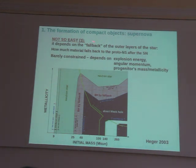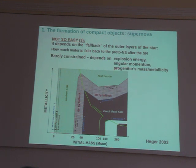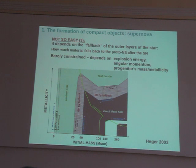Then there is also very uncertain what is the fallback. During a supernova you may be able to eject all the outer layers, or some of them can fall back onto the proto-neutron star and accrete very fast on it. It is very unclear what is the amount of fallback that can accrete onto the proto-neutron star, because it depends on the explosion energy, on the angular momentum transferred inside the central part of the star, and on the progenitor mass and metallicity.